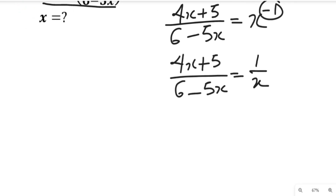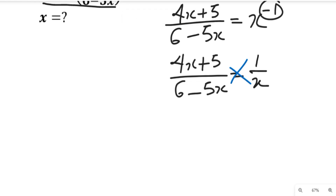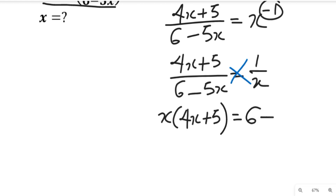So having done that, the next thing we are going to do is to cross multiply. If we cross multiply, this will give us x multiplying (4x + 5), and this will be equal to 1 multiplying (6 minus 5x), which gives us 6 minus 5x.